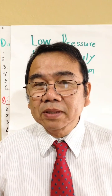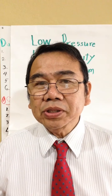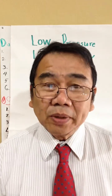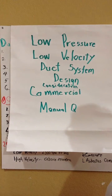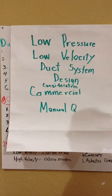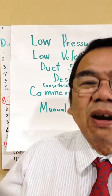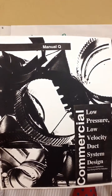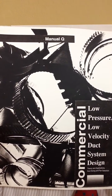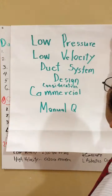Good morning, I am Mr. William T. Dongo, your professor for today, and I'll be giving a lecture concerning the commercial low pressure, low velocity duct system design considerations. This is for commercial use. We're going to use the book Manual Q, which you can buy at Amazon.com. This is the book I use as a reference, and I give the lecture chapter by chapter.